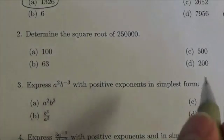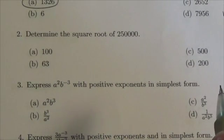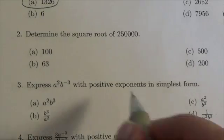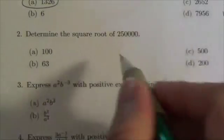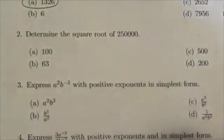Hi everyone, this is the 10c exponents and radicals review. This is multiple choice number two. We're gonna take the square root of 250,000.